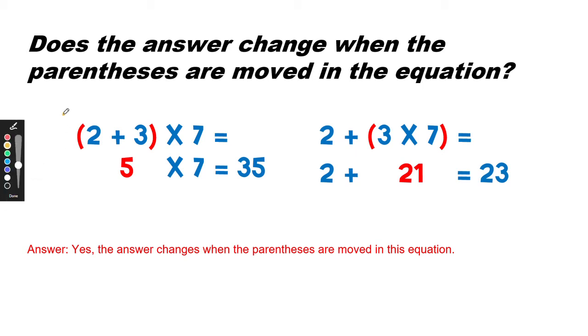Looking at the left-hand side, notice that first we would add 2 plus 3 equals 5, because it's in the parentheses, right? 2 plus 3 equals 5. And then we would take the 5 and multiply by 7 to get 35.